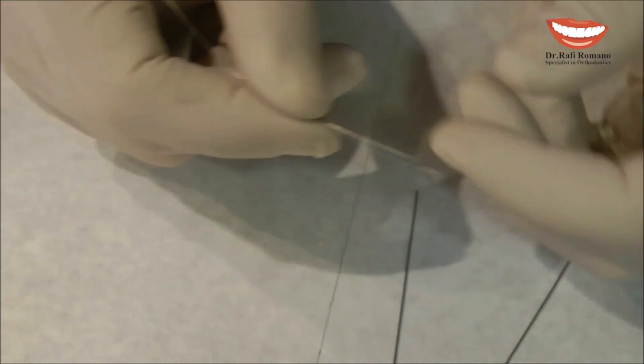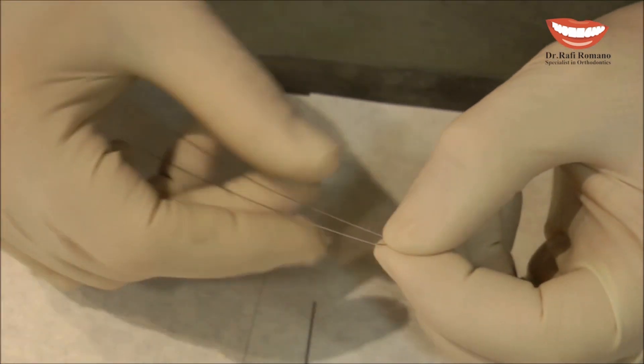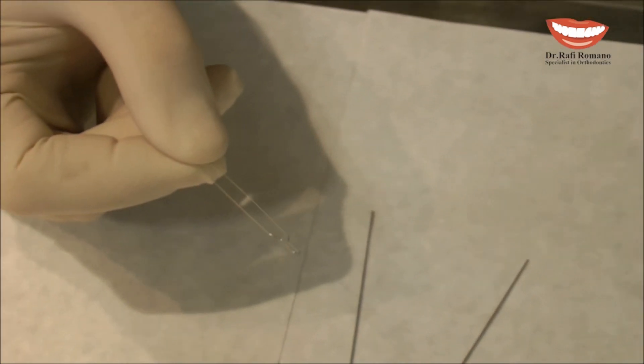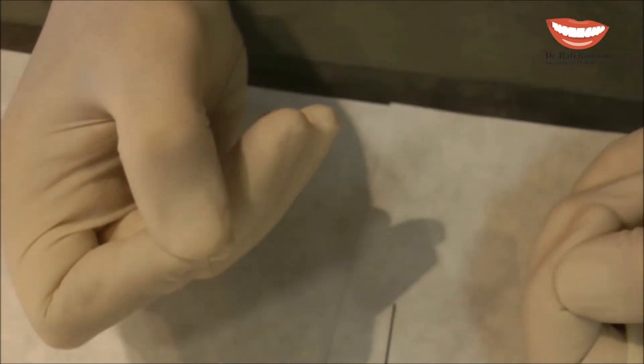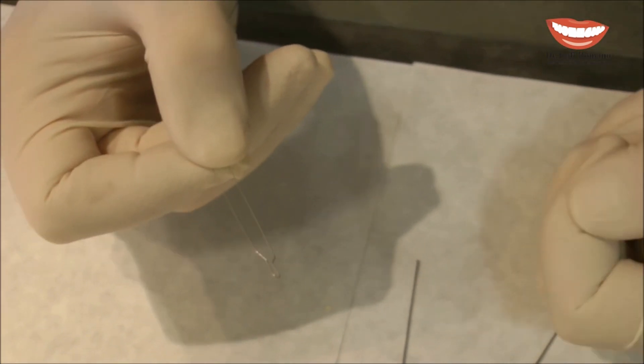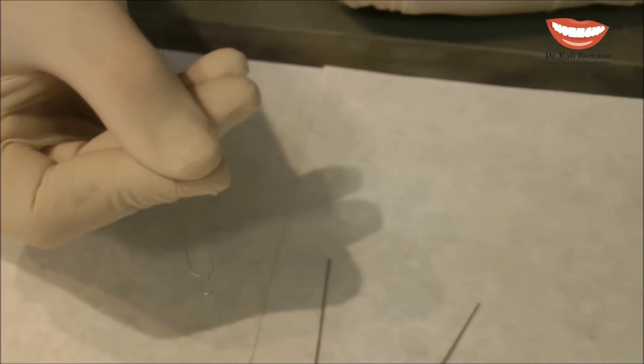To do figure 8 is very easy. You go with the ligature down the bracket, up the bracket. I usually do it under the wire so I can put the wire inside and do not need later on to replace this metal ligature.